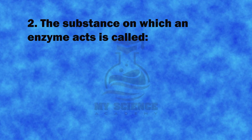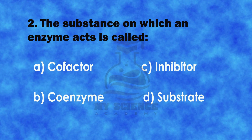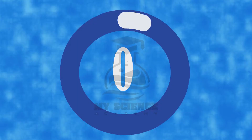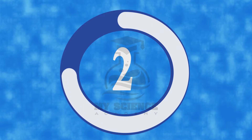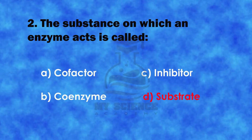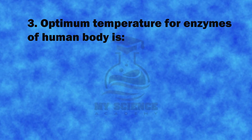Question 2: The substance on which an enzyme acts is called: A. Co-factor, B. Co-enzymes, C. Inhibitor, or D. Substrate. The correct answer is D. Substrate.